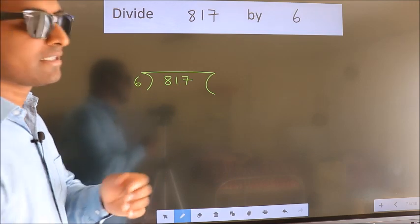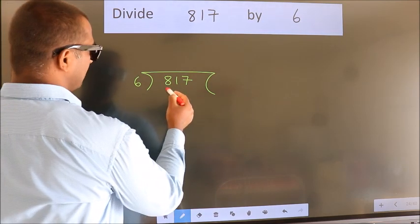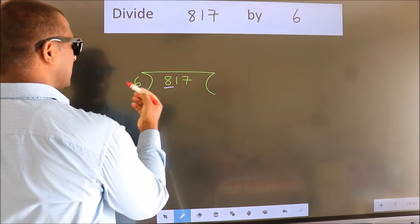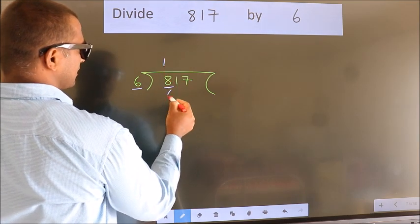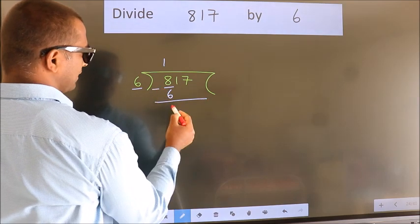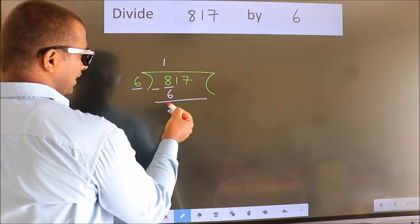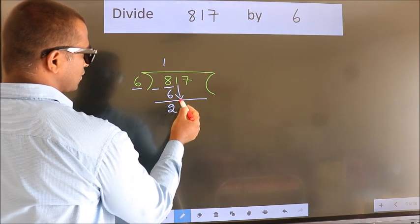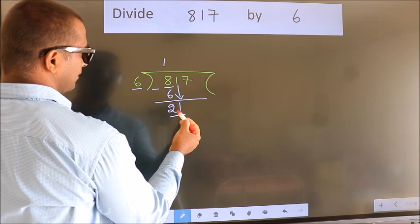Next, here we have 8, here 6. A number close to 8 in 6 table is 6 1 6. Now we should subtract. We get 2. After this, bring down the beside number. So 1 down. So 21.